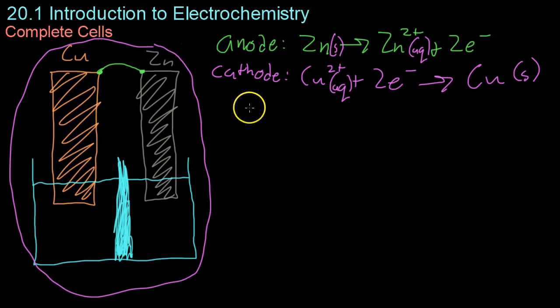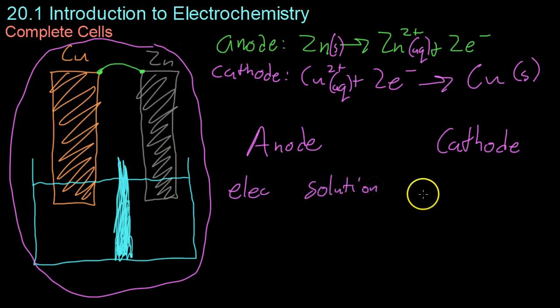You describe a complete cell using a given format. That is, you describe the anode first and then the cathode. Not only do you describe which end is the anode and cathode, but you also have to describe the electrode as well as the solution for both.